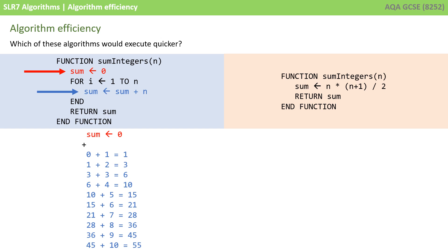There are 10 additional lines of code that need to be executed. On the right, we can see we have again a single line of code: sum becomes equal to n times n plus 1 divided by 2. That's not inside an iterative statement like a for loop — that line of code simply runs once, and that is it.